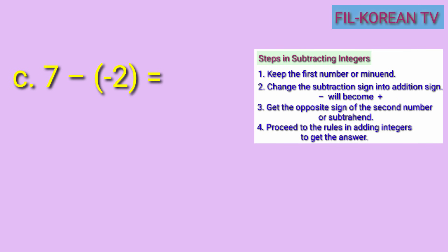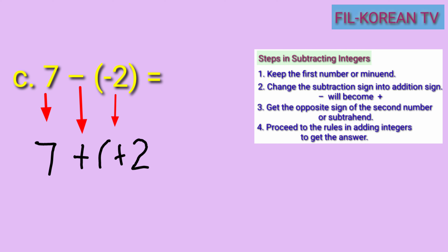Let's have another example: positive 7 minus negative 2. First, keep the minuend, 7. Then change the subtraction sign into addition, so minus will become plus. Then get the opposite sign of the subtrahend — negative 2 will become positive 2. Then apply the rules in adding integers. The problem becomes 7 plus 2, or positive 7 plus positive 2. The answer is 9 — we will just add because the numbers are both positive. So, 7 minus negative 2 equals positive 9.